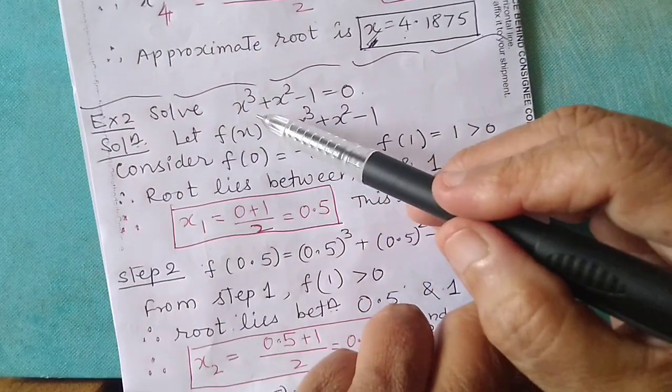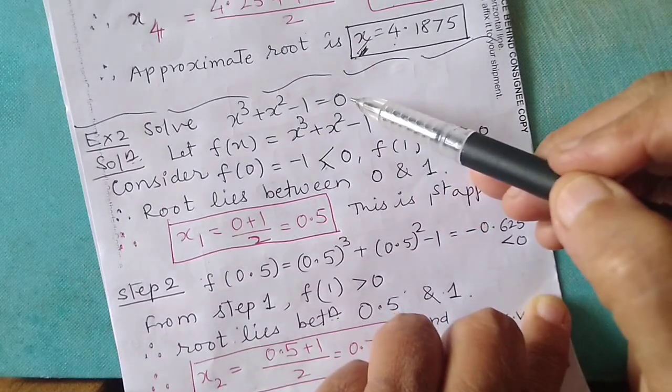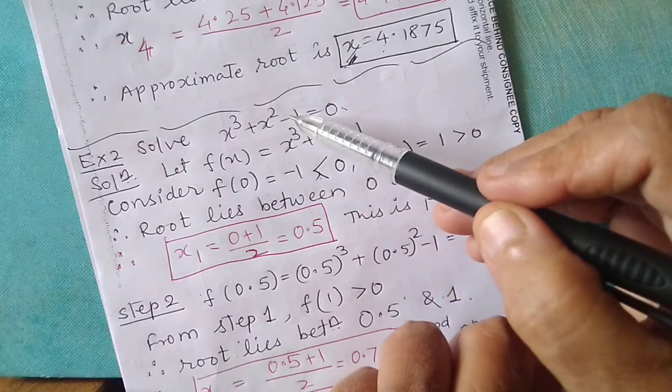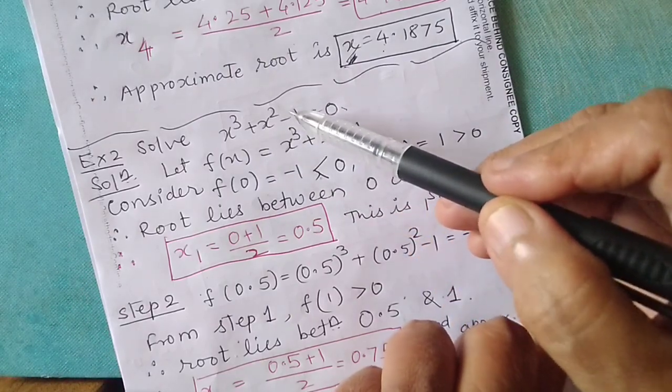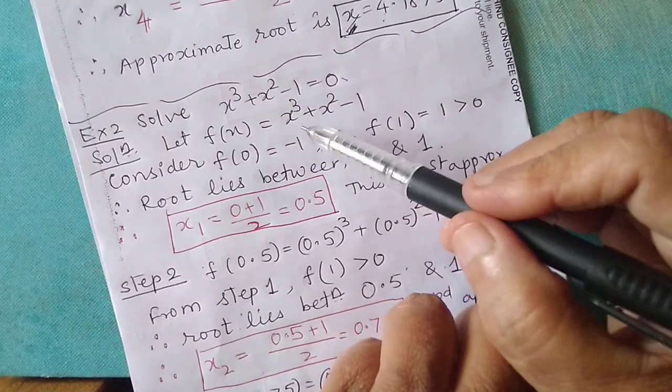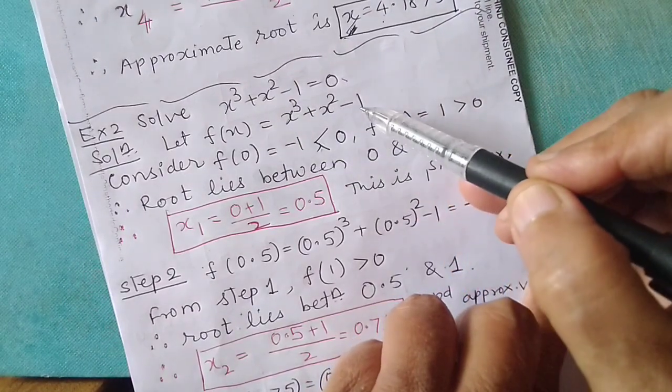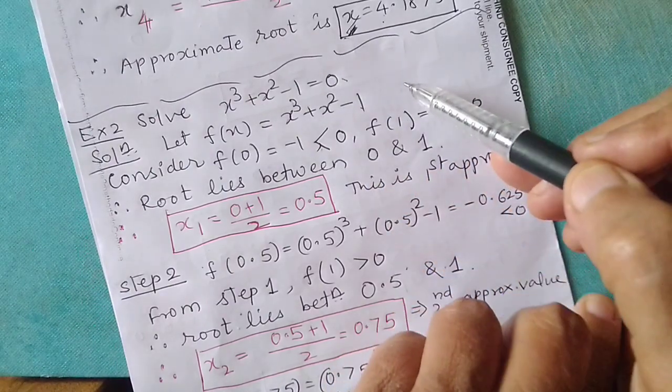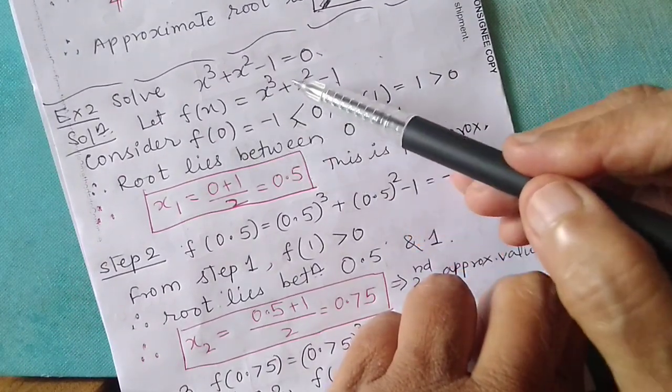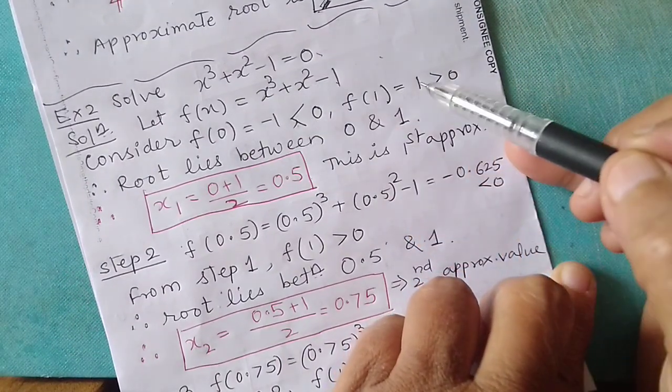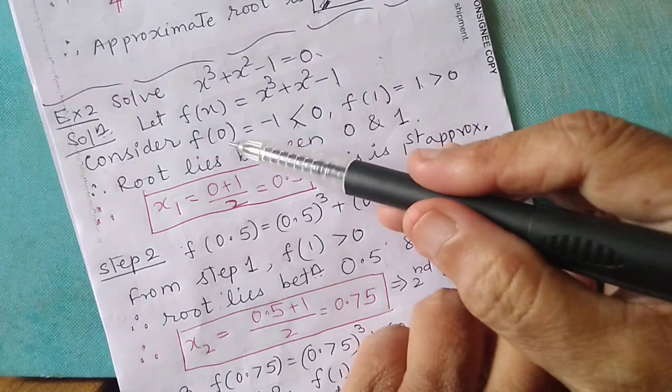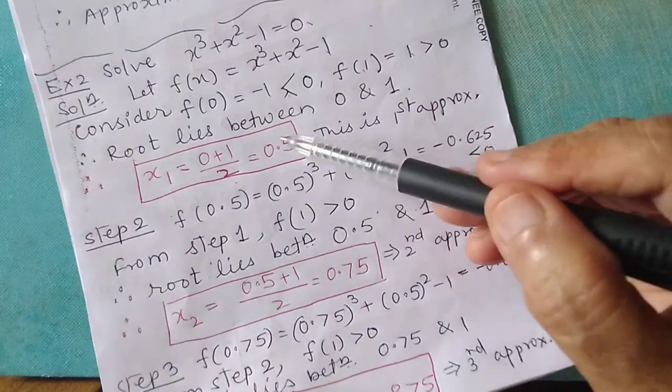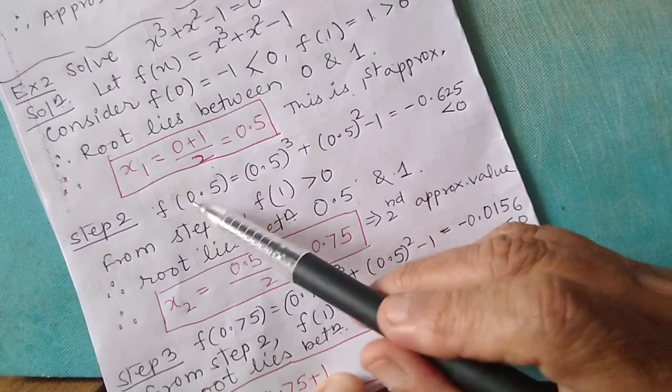The next example: solve x cube plus x square minus 1 equal to 0. As you can see, it is not possible for us to factorize this equation easily. So let f of x equal x cube plus x square minus 1. f of 0 is negative and f of 1 is positive. The root lies between 0 and 1.